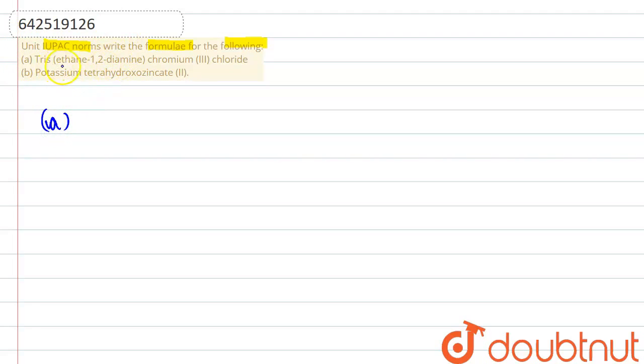The first one says tris ethane-1,2-diamine chromium(III) chloride. It's clear from the word tris that there would be three ligands over here, ethane-1,2-diamine. And chromium is the central metal and there is a roman number written in the bracket of chromium that represents its oxidation state. So chromium is present here in plus-3 oxidation state and chloride would be present outside the coordination sphere. Now let's understand it.